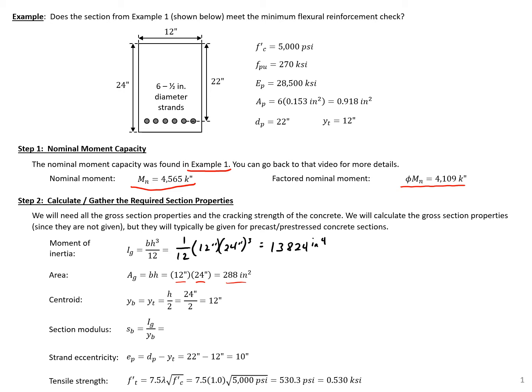Our centroid, we have a rectangular section, so our centroid is just going to be h over 2 or 12 inches. So that's the same distance from the top to the centroid or the bottom to the centroid. And then our section modulus is going to be our i-gross, 13,824 inches to the fourth divided by yb, 12 inches, which will give us a value here of 1,152 inches to the third. Our strand eccentricity, just the strand depth minus the distance between the centroid and the top of the section, which will give us 10 inches.